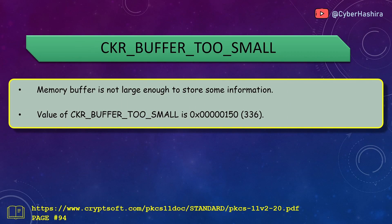Some PKCS11 functions require a memory buffer with pre-allocated memory. If the size of data being returned by a function is larger than the allocated buffer, CKR_BUFFER_TOO_SMALL is returned. Its value is 0x150 and can be read about on page 94.